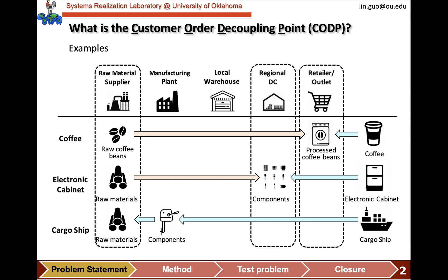As to a cargo ship, the CODP is further advanced, very close to the raw market, because the standard components are quite basic and the customer can wait. The positioning of CODP for a product depends on the configurability and order frequency of the product, and the easiness of different formats of storage.